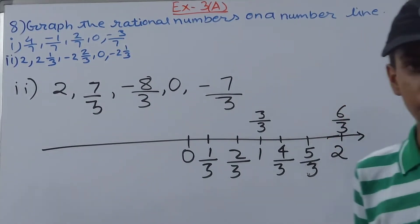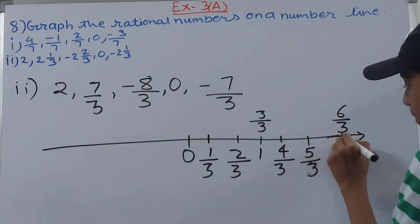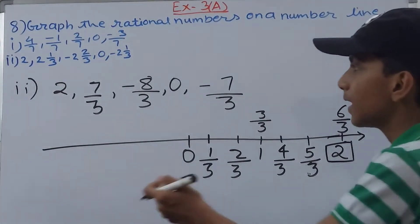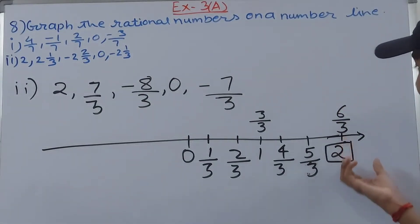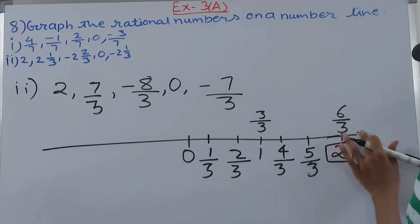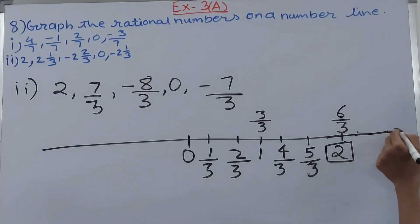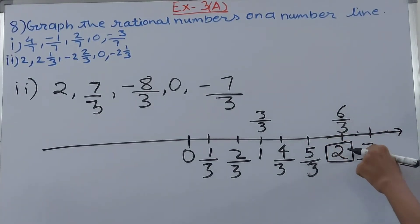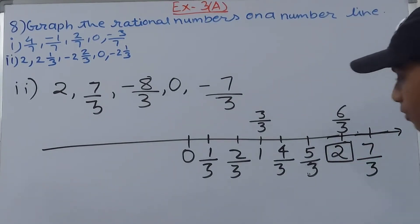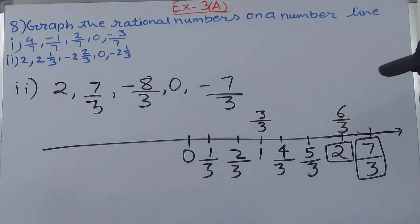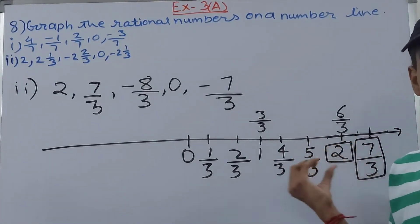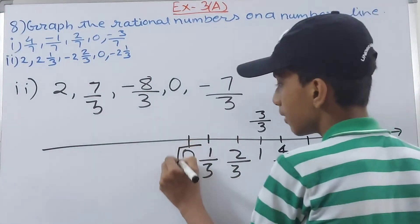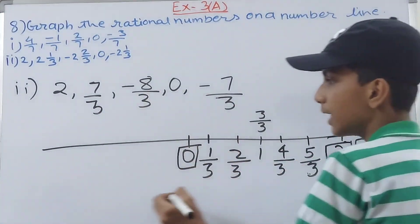Here is 2 whole, which is 6 upon 3. We still need 7 upon 3, so we extend the line further. After 6 upon 3, the next mark is 7 upon 3. We graph 7 upon 3 here. Then we have 0 already marked, and we proceed to make the negative side.